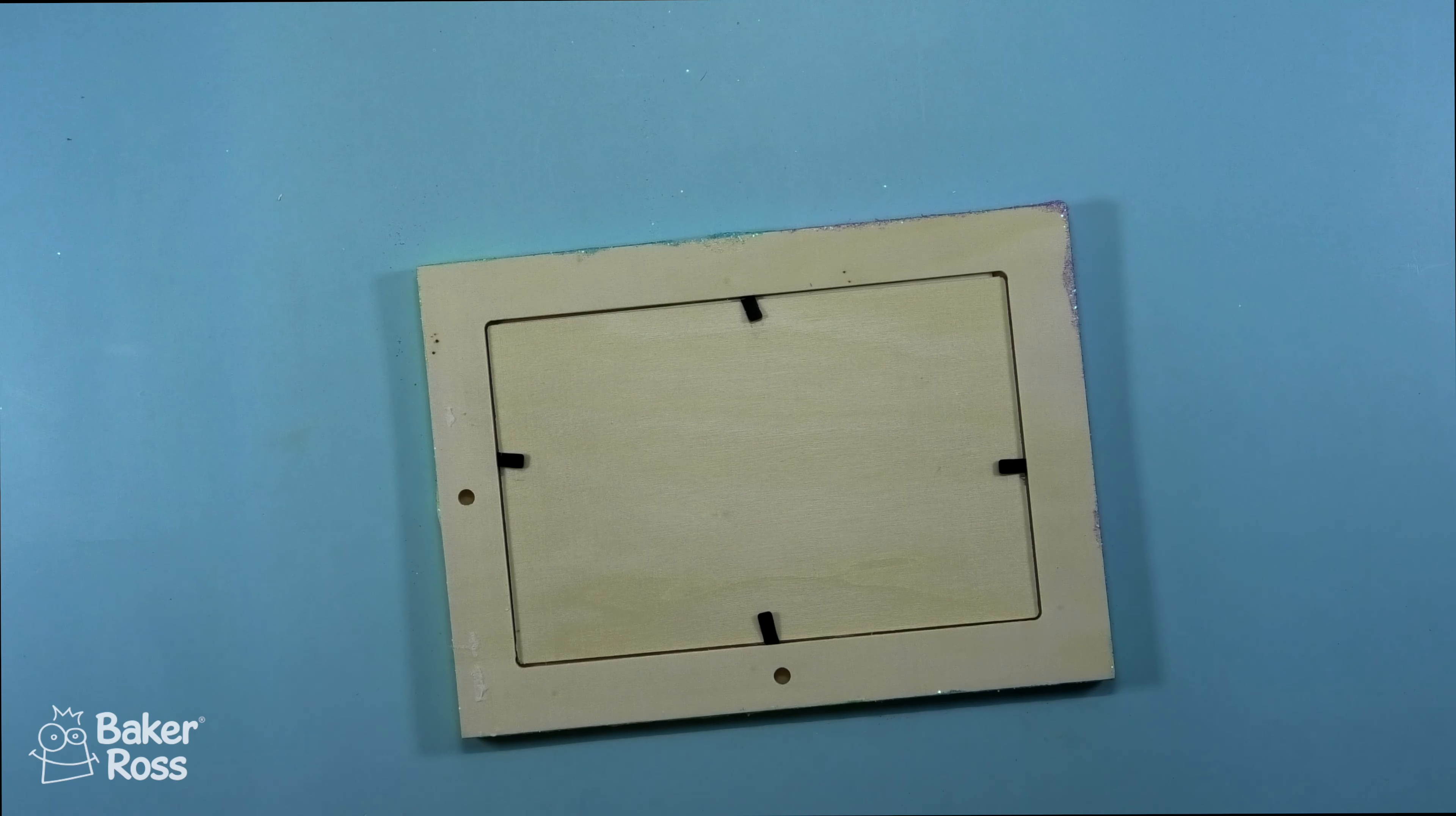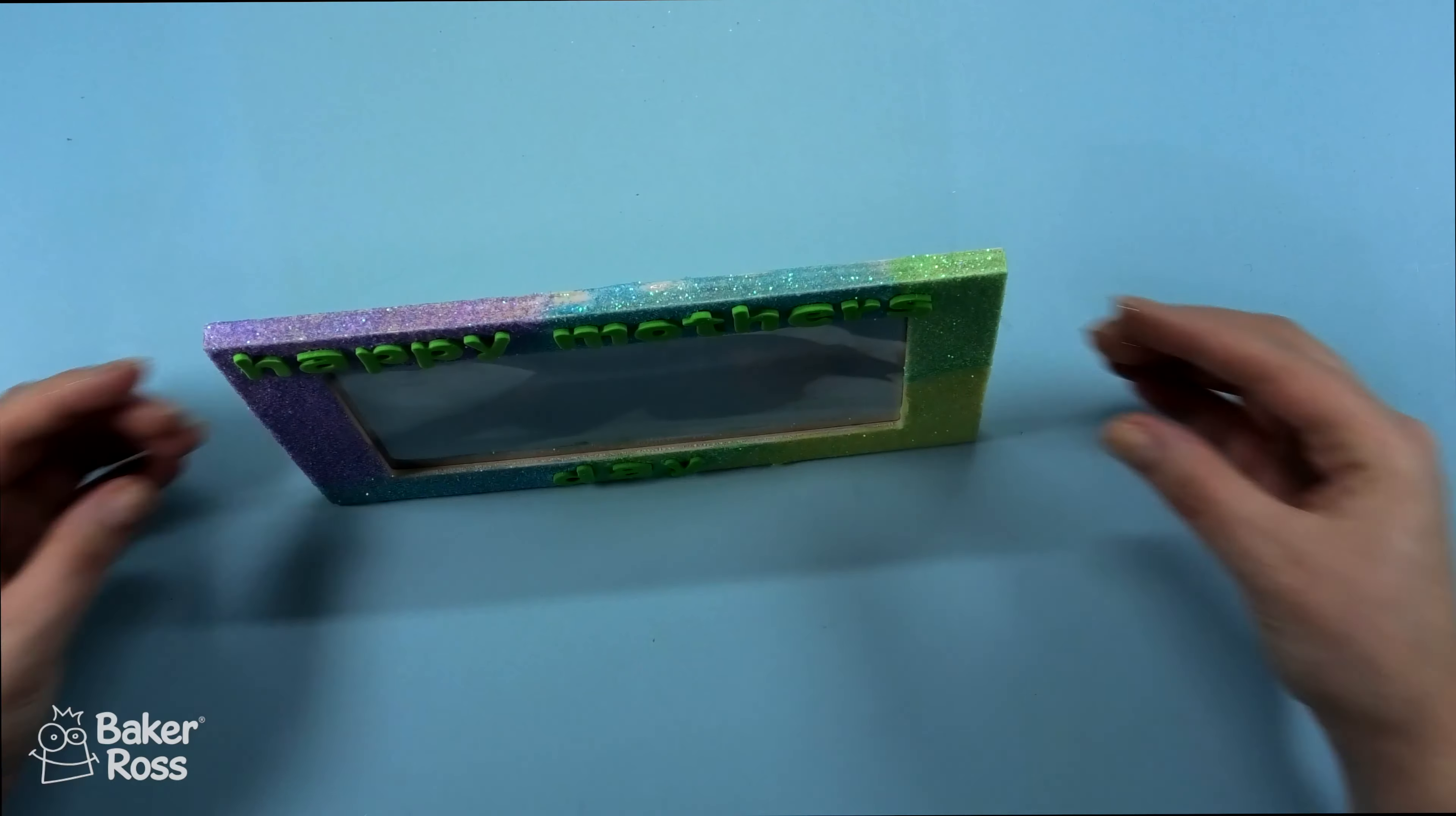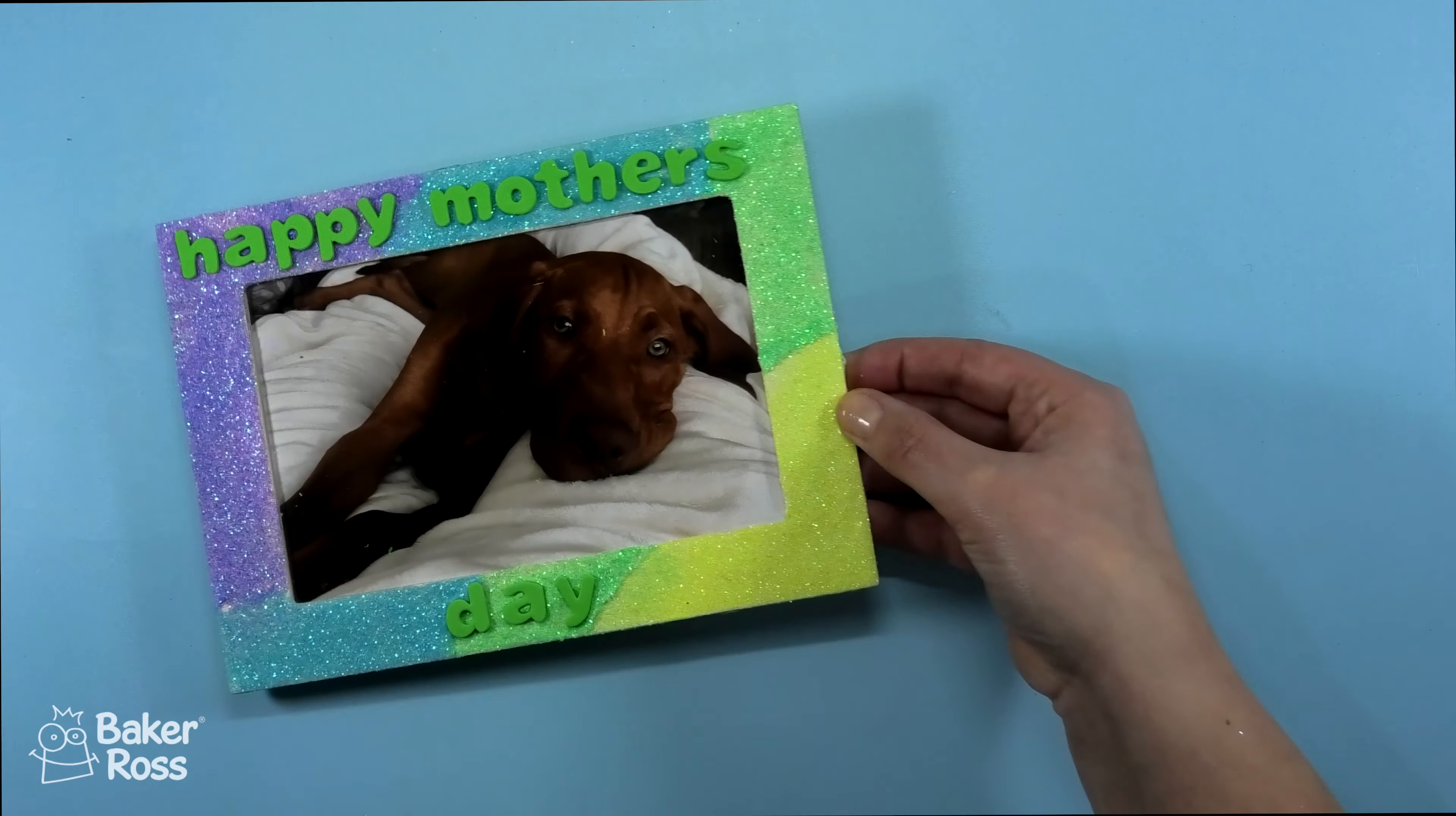I'll seal up the back and then this small wooden dowel acts as your photo stand. You can see you can use it either in a horizontal or a portrait version.